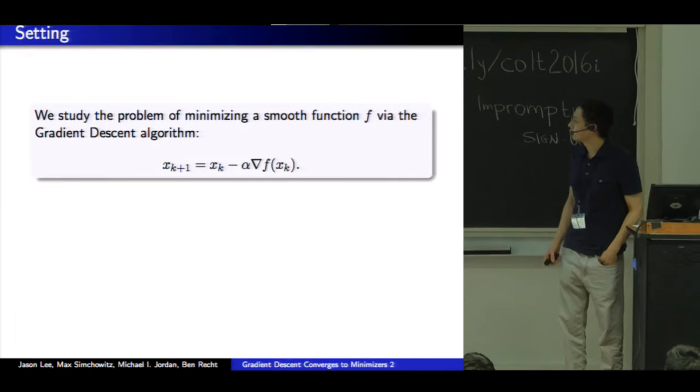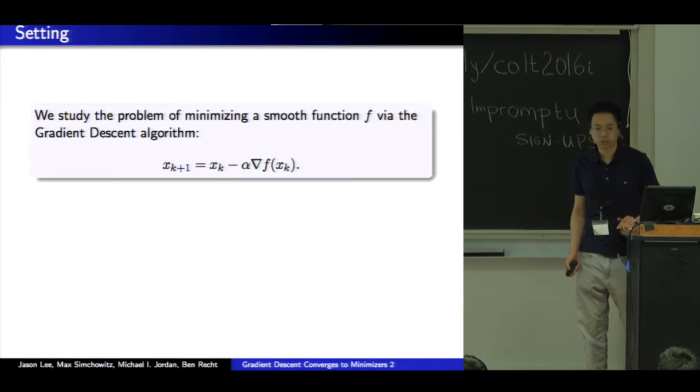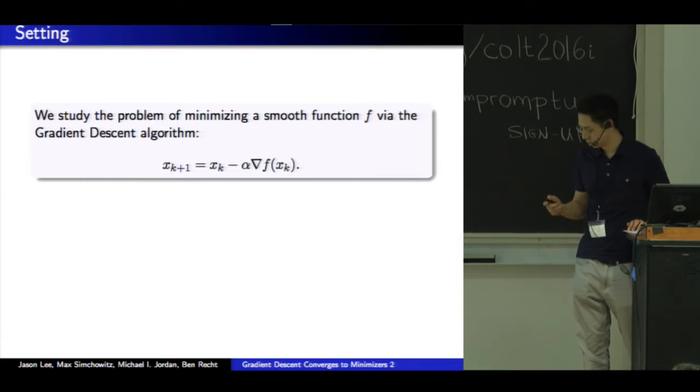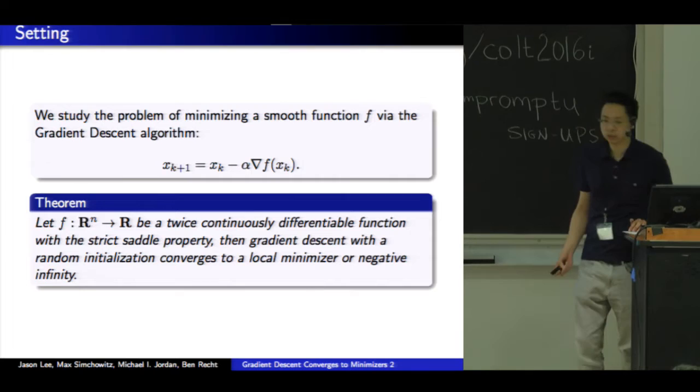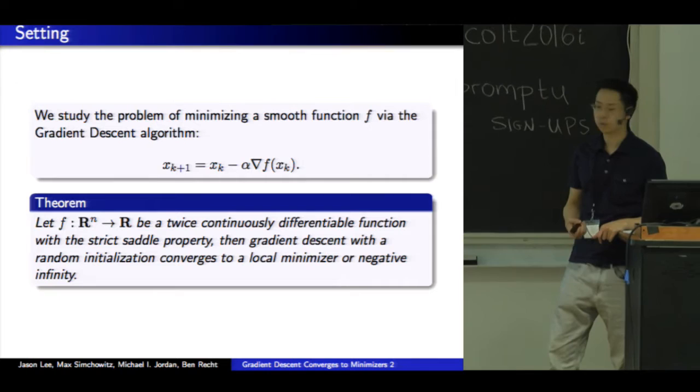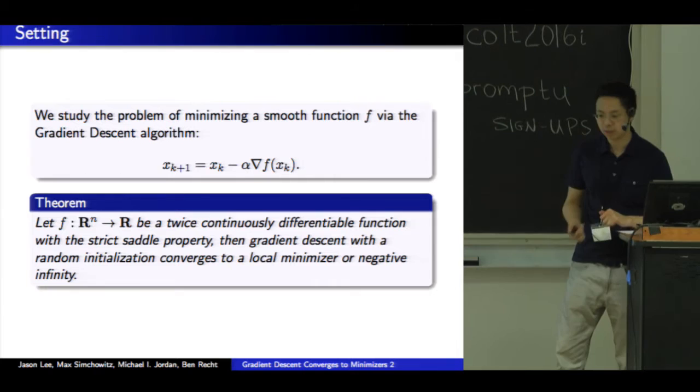We're going to study a very classical problem of minimizing a twice differentiable function, f, using the gradient descent algorithm, which I'm sure everyone here is familiar with. And this is our main conclusion. So f is a twice continuously differentiable function with a strict saddle property. I'll talk about that later. Then gradient descent with a random initialization either converges to a local minimizer or negative infinity, meaning the function's unbounded below.